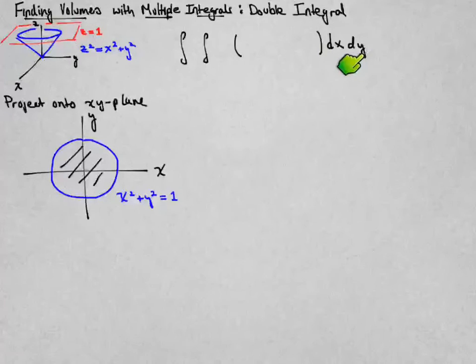I've chosen to do the y limits of integration last, so I'm going to calculate them or determine what they should be first. Because it's a circle of radius 1, y is ranging between negative 1 and 1.